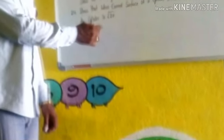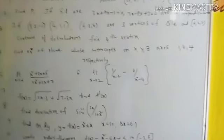1st Question: Find condition for the points a, 0, h, k and 0, b to be collinear.